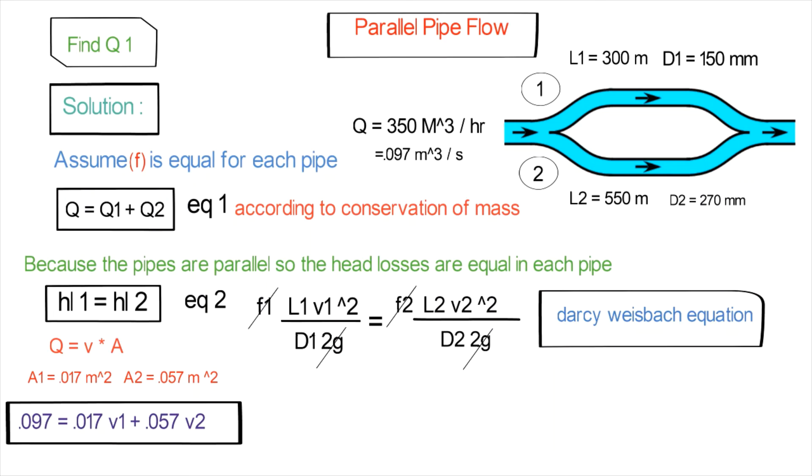We need to find Q1, so before finding Q1 we have to find V1, since V1 times A1 equals Q1. From the Darcy equation, V2 squared equals L1 times D2 divided by L2 times D1, all times V1 squared.